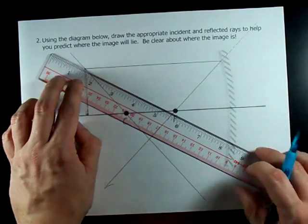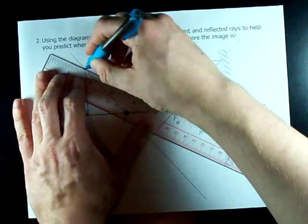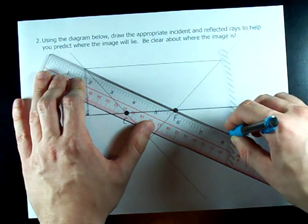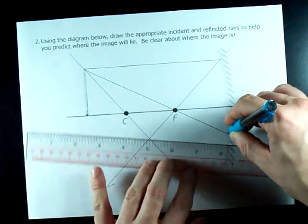The last line is starting at the tip of the pencil, going through F. Until you reach the mirror, because of course light can't go through a mirror, and it bounces back straight.